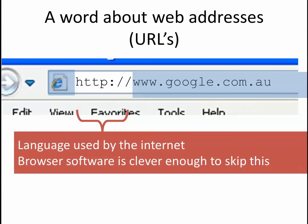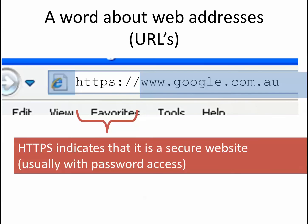The very first part of a URL is HTTP — hypertext transfer protocol — the language that the internet uses. We can pretty much ignore that. Modern browsers don't demand that you type in HTTP colon forward slash forward slash. The useful bit is sometimes you can see HTTPS, which means it's a secure site. Depending on your browser, you might see a little padlock, meaning it has password access or an account you've logged into. Check Facebook — it'll have a padlock or HTTPS to tell you it's a secure, encrypted site.